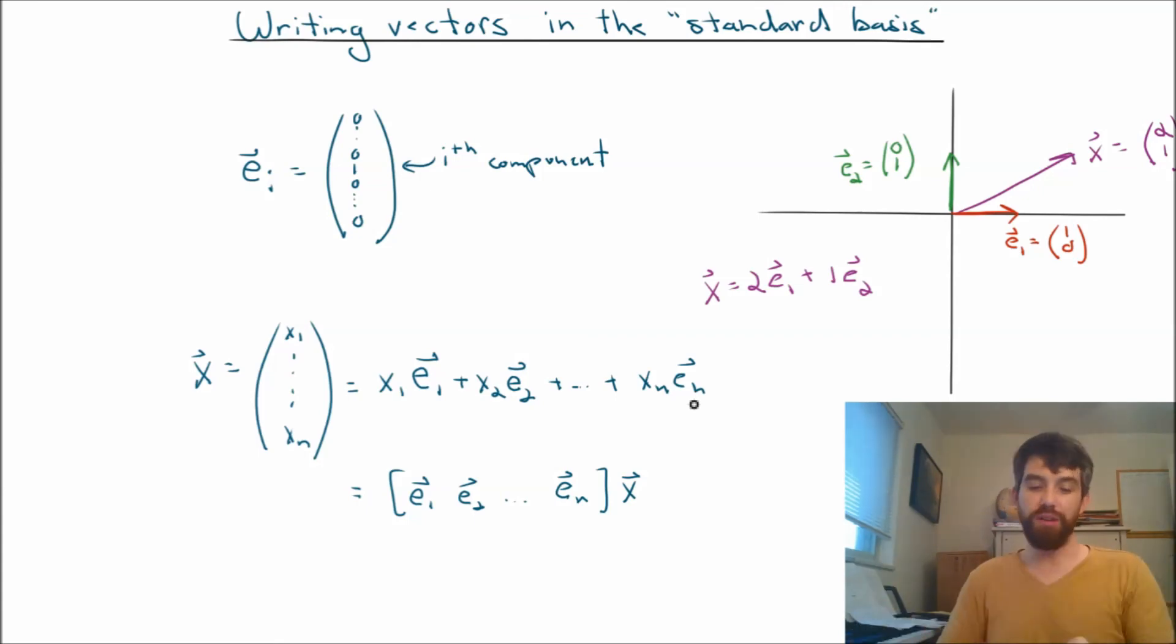Finally, we can use this to give a different interpretation of what a vector really is. In this way of thinking, a vector is an instruction that tells you what linear combination of the standard basis vectors you're taking. Because every vector can be written in this way, it's telling you which particular linear combination of the standard basis vectors you're talking about. That is one way to think about what a vector is.